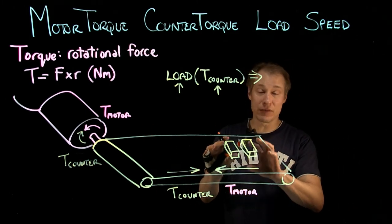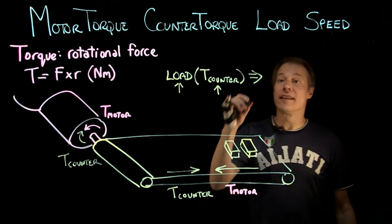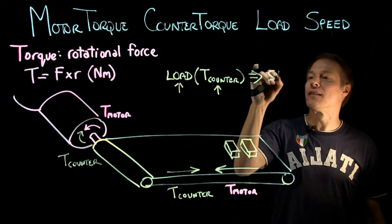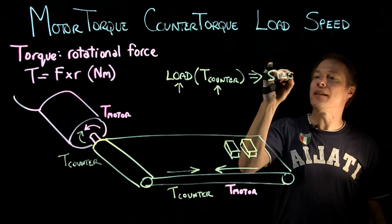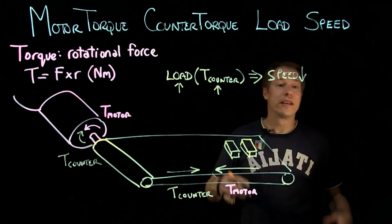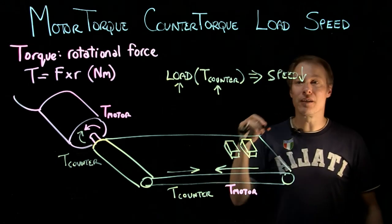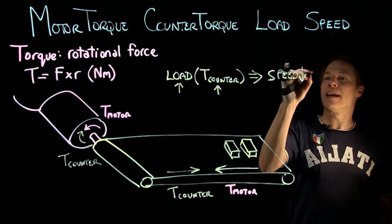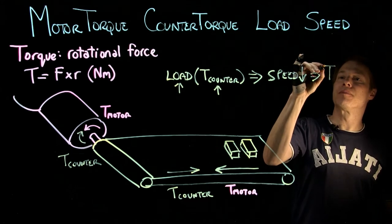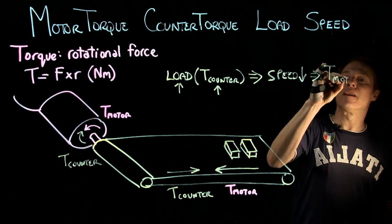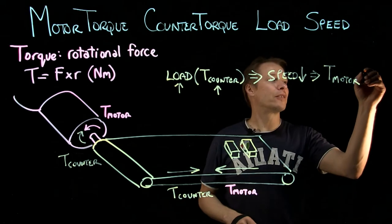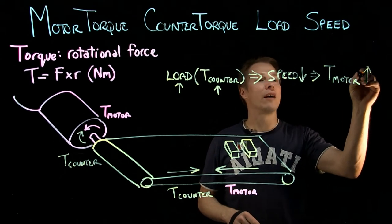The counter torque going in the opposite direction of motor torque is caused by the load, and that is going to affect our speed. The speed of the motor is going to go down, and when the speed of the motor goes down, that is going to affect the torque of the motor — the torque of the motor is going to go up.